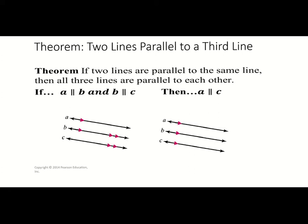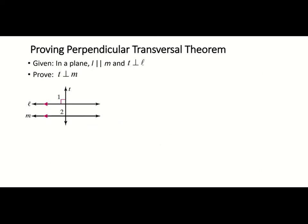Our next theorem is 'two lines parallel to a third line,' which is like the transitive property with parallel lines. It says if two lines are parallel to the same line, then all three lines are parallel to each other. So if a is parallel to b and b is parallel to c, then a is parallel to c — just the transitive property applied to parallel lines.